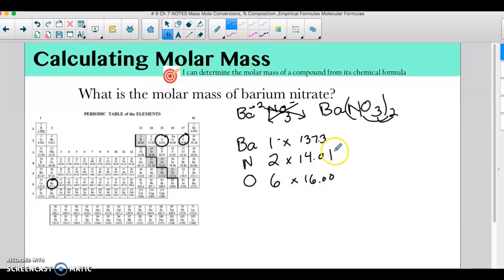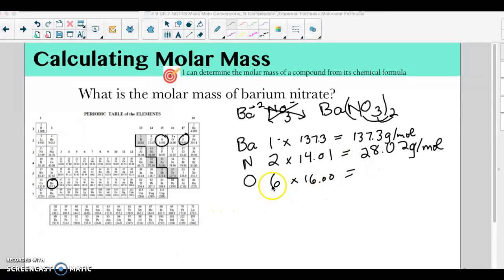So once I know this, then 1 times that would be 137.3 grams are in a mole of barium. Here we have 28.02 grams are in 2 moles of nitrogen—but it would be grams per mole. And then 6 oxygens each have a mass or molar mass of 16, so this would be 96.